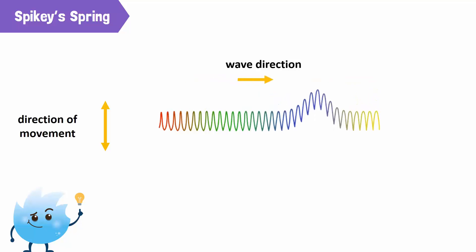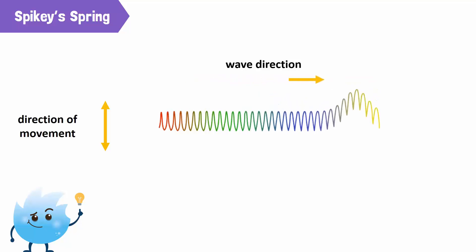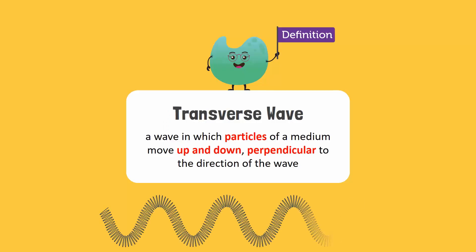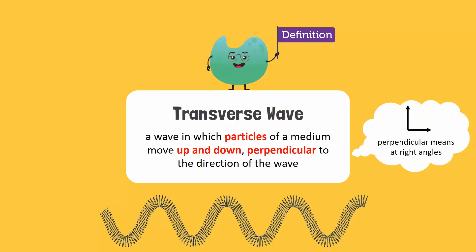The wave direction is perpendicular to the direction of the movement of the hand. A wave in which particles of a medium move up and down, perpendicular to the direction of the wave, is called a transverse wave.